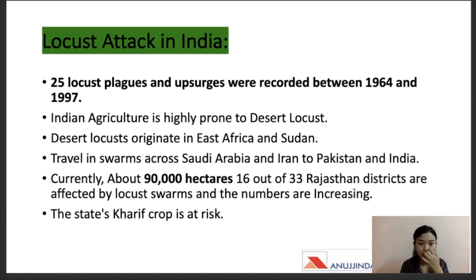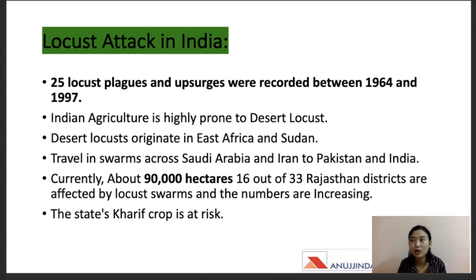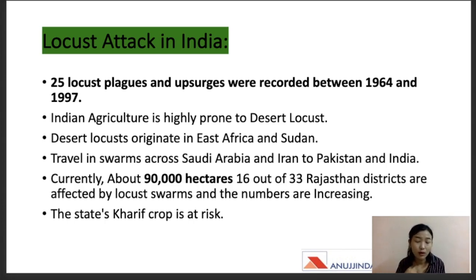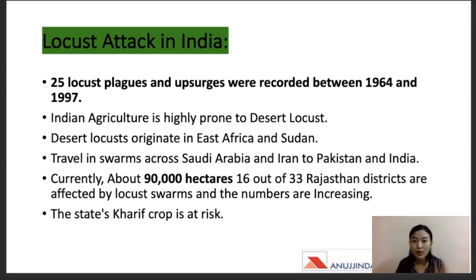The bigger swarms break into smaller swarms and affect different parts of the country. The incursion of locusts and pink swarms has been reported to have come much earlier this year compared to previous reports. The reason cited was the residual population of locusts in Pakistan from the previous season that was uncontrolled. Swarms entered India through the desert region of Rajasthan and moved towards Madhya Pradesh, destroying crops and pastures. About 90,000 hectares of land have been affected in Rajasthan, with around 20 out of 33 districts affected and numbers still increasing.